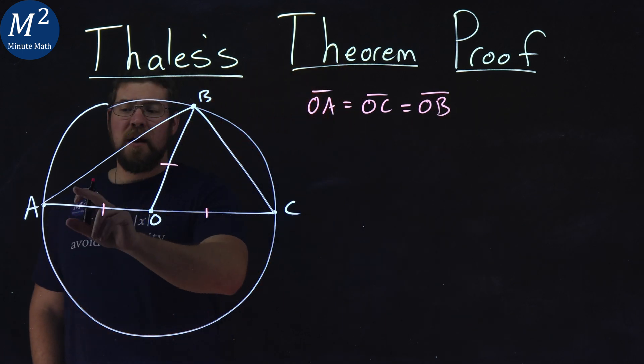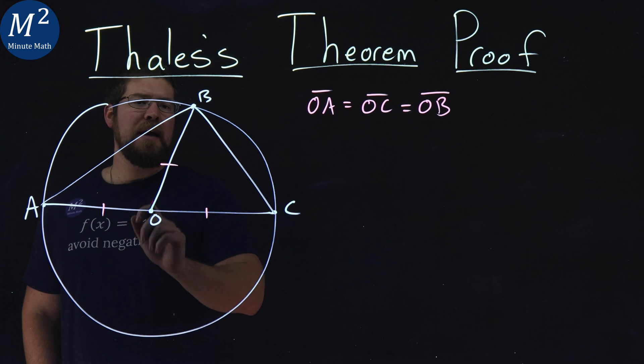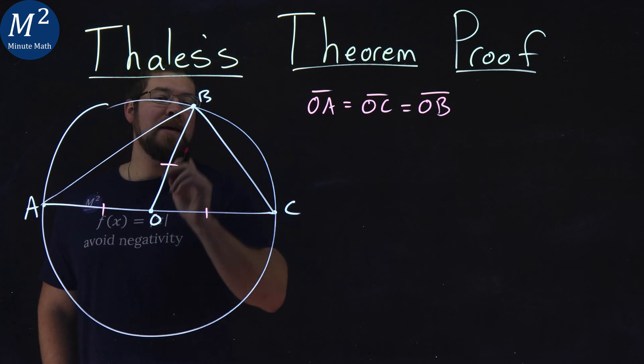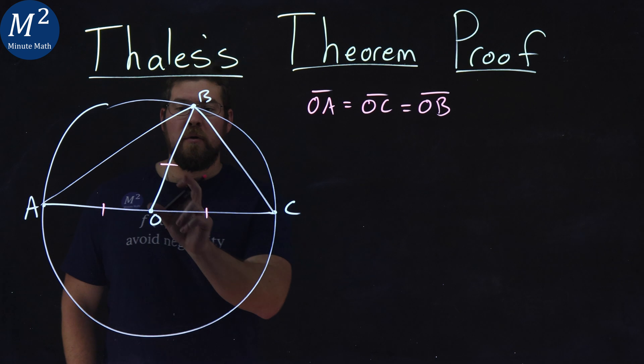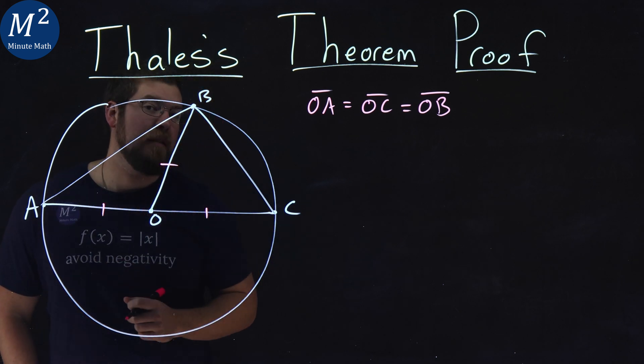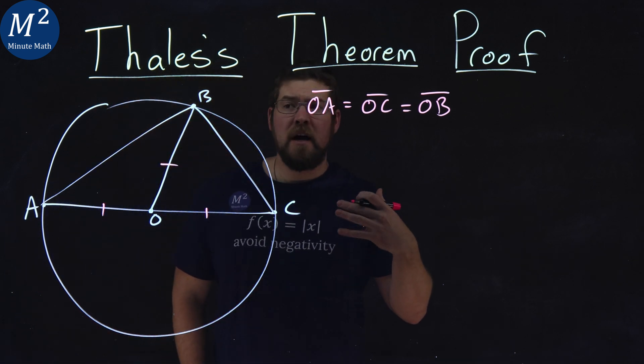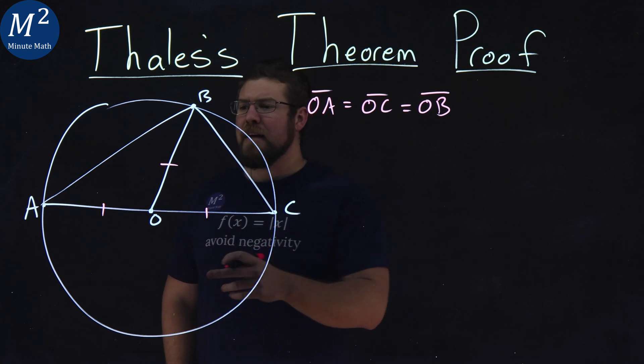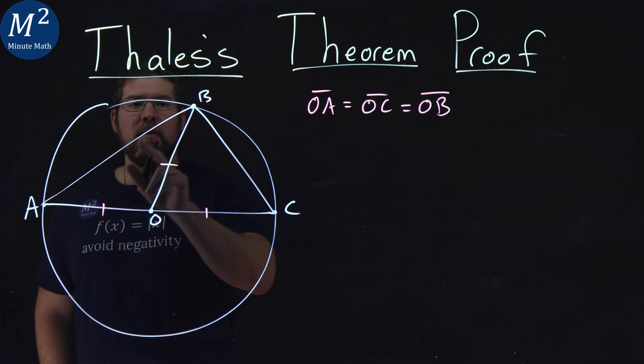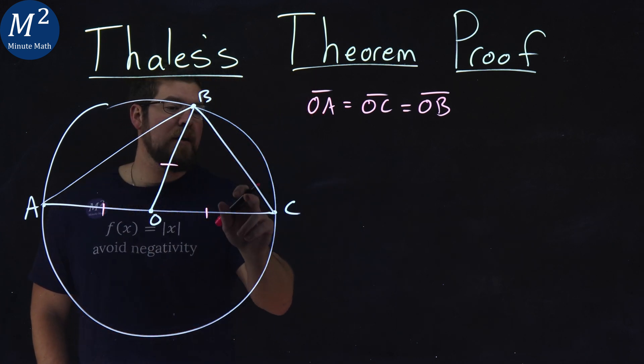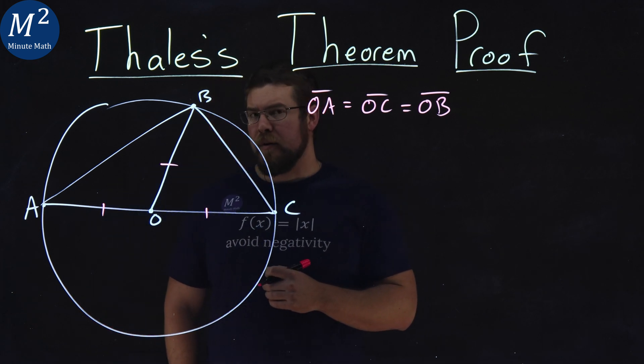That tells us here that triangle ABO and triangle COB are actually isosceles triangles. They both have two sides of the same length. What we know about isosceles triangles, then, is that the base angles of each isosceles triangle are congruent to each other, or equal to each other.